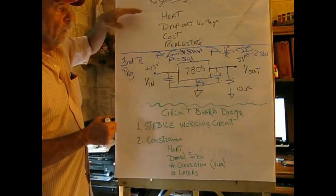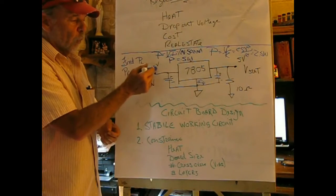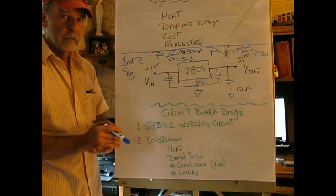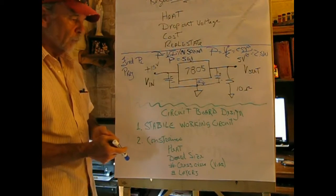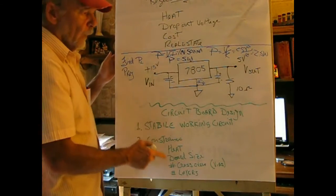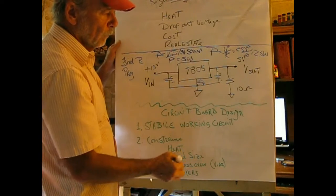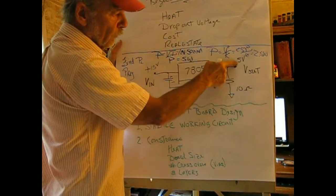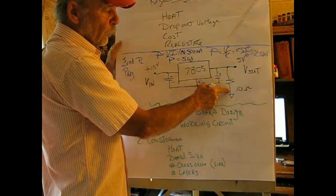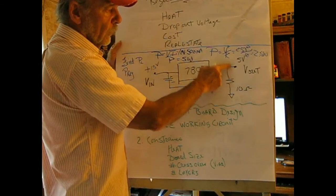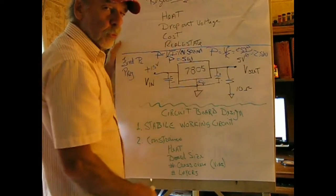So regulator issues: heat, how hot do they get, that's a concern. What's the dropout voltage, which means how low can this go before the regulator fails? Cost and real estate is how much room does this take up on a circuit board. So we're going to look at these, and we'll start by determining power. The load current is equal to 5 volts divided by 10 ohms, which is 500 milliamperes, half an amp. And if we wanted to find the power in this load resistor, I chose V squared over R, gives us 25 over 10, or 2.5 watts.